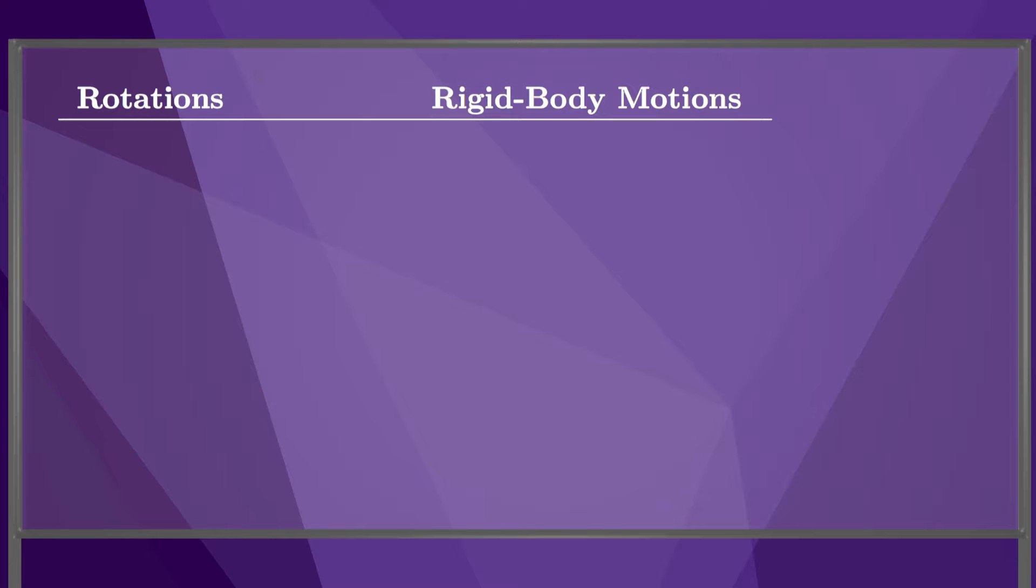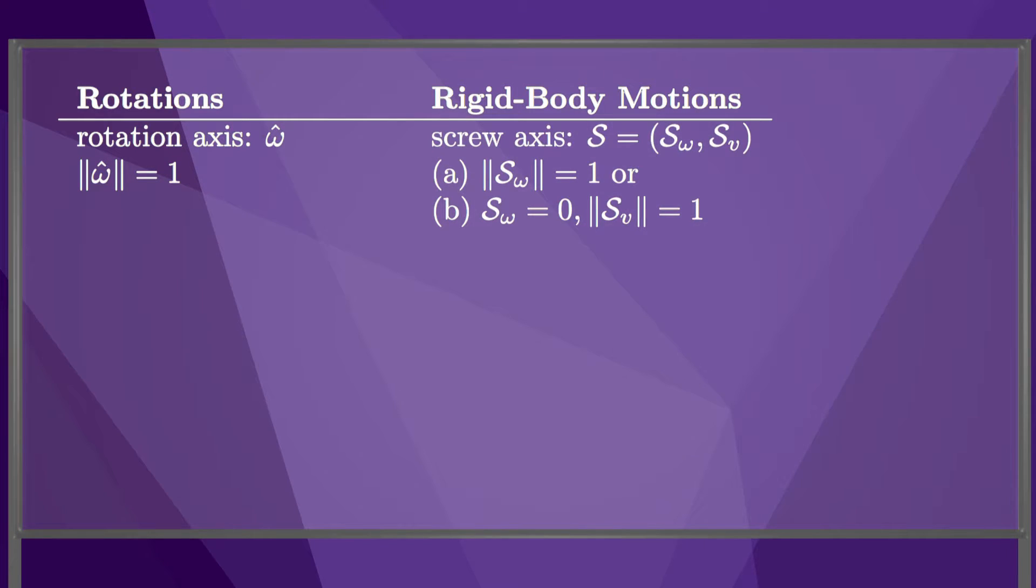Let's look at some of the analogies between rotations and full rigid body motions. For rotations, we have a unit rotation axis omega hat. For rigid body motions, we have a screw axis where either the angular component is a unit vector, or the angular component is zero and the linear component is a unit vector.